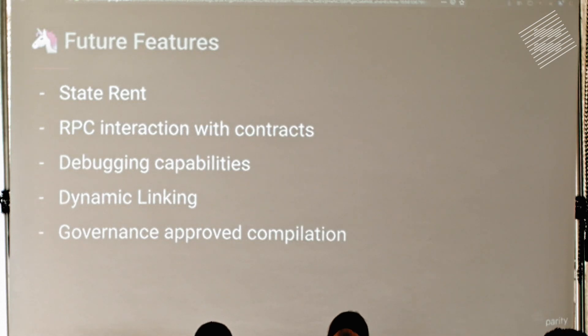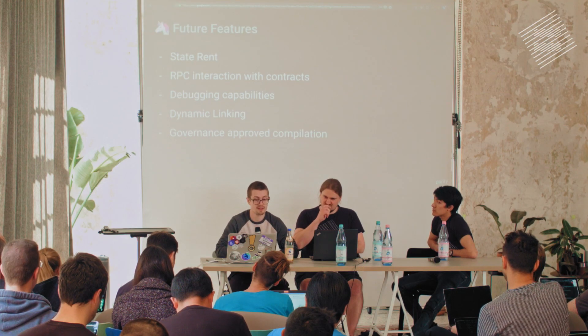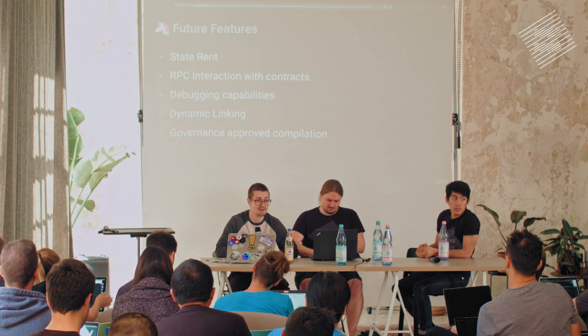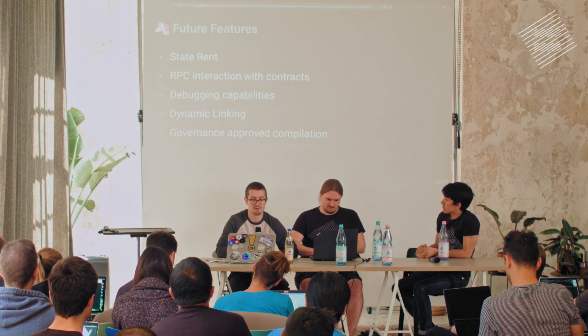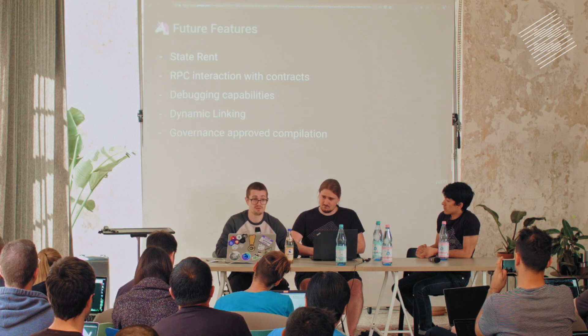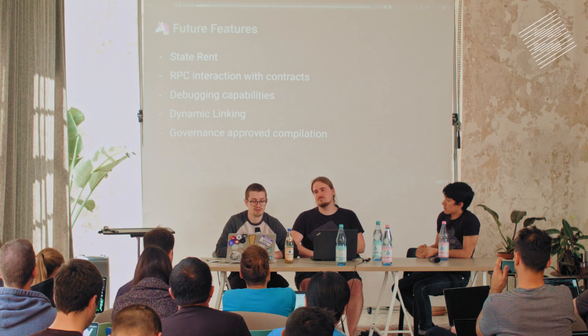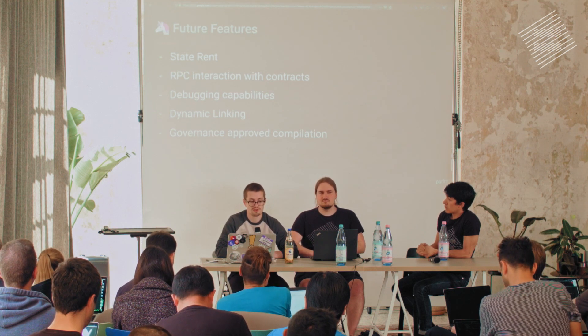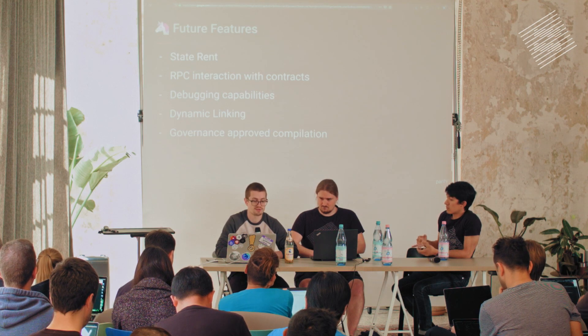There are some ideas we might implement in the future. The first one is really important — state rent. Ethereum has demonstrated that the scheme 'pay once, store forever' doesn't work for a long time. Because of that, we want to add state rent as soon as possible. We might also want to add some RPC interaction with contracts — for example, extrinsics can't return every result, so top-level contracts could return data as well, which might be really useful for app developers. And we want to add some debugging capabilities, because debugging on-chain code can be challenging.